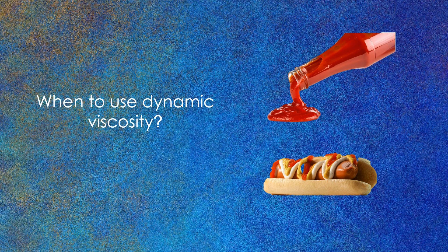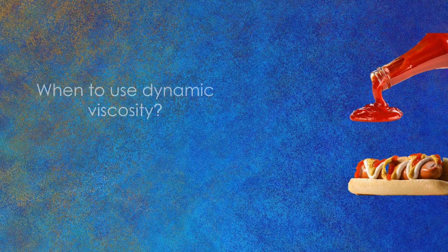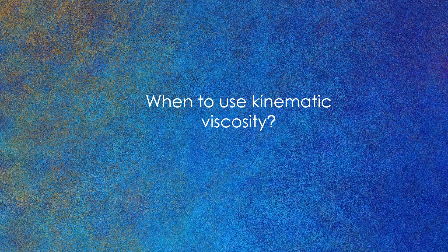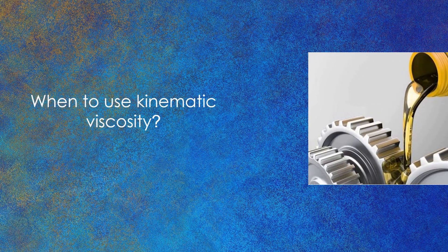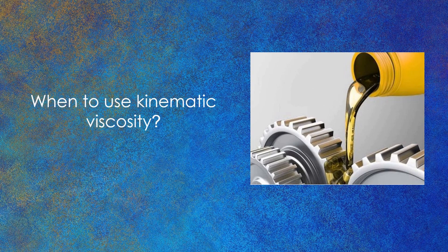So for this we need to measure the dynamic viscosity of the ketchup. Now let's see when to use kinematic viscosity measurements. This is mostly done for Newtonian liquids which do not change their viscosity under some applied force, for example lubricating oils.